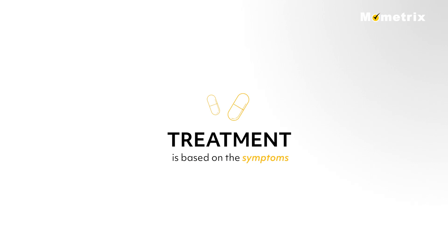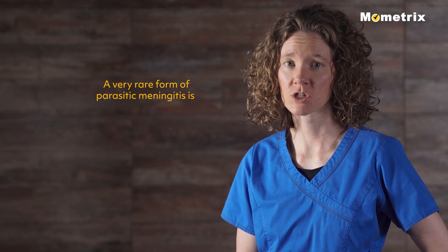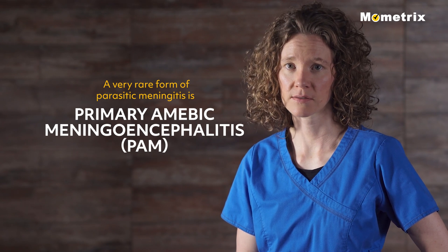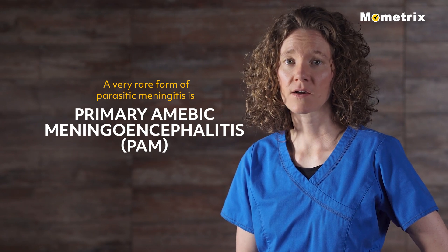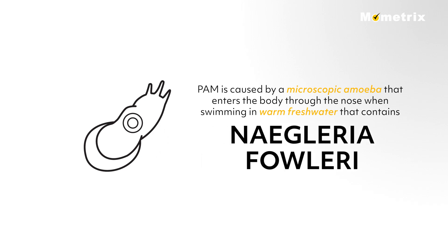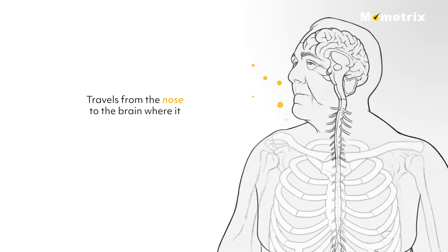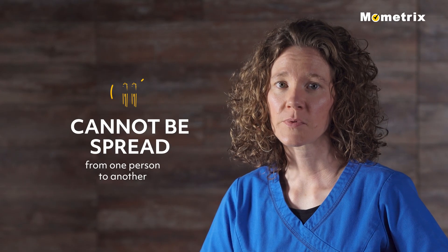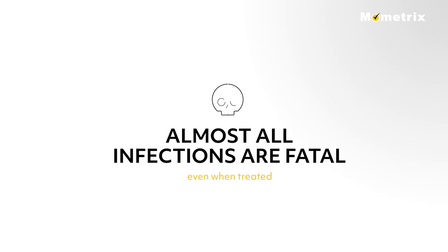Treatment is based on the symptoms. A very rare form of parasitic meningitis is primary amoebic meningoencephalitis, or PAM, that causes a brain infection that is usually fatal. PAM is caused by a microscopic amoeba that enters the body through the nose when swimming in warm freshwater containing Naegleria fowleri. This amoeba travels from the nose to the brain where it destroys the brain tissue. It cannot be spread from one person to another, and almost all infections are fatal, even when treated.